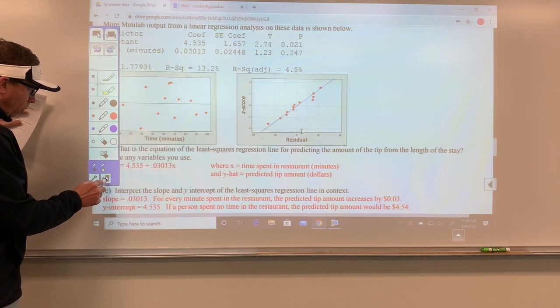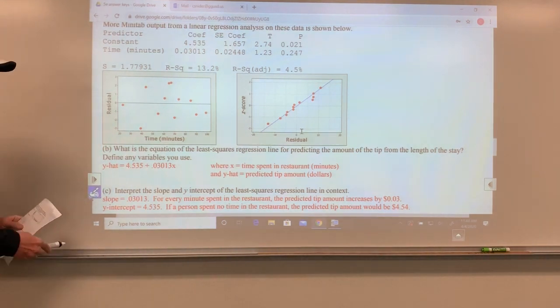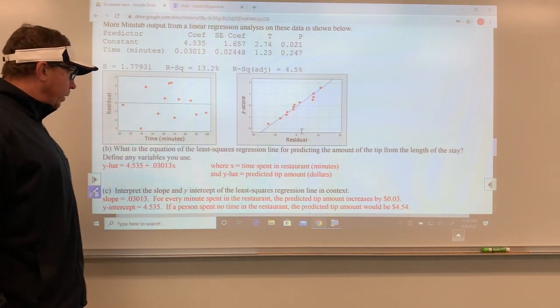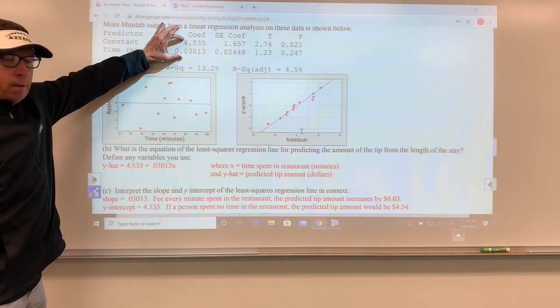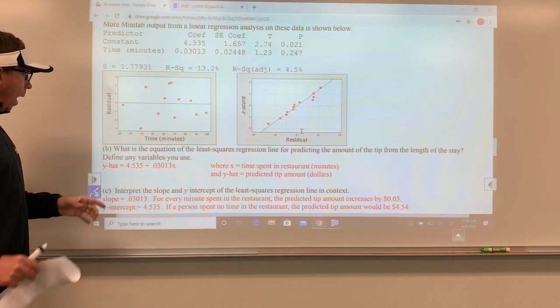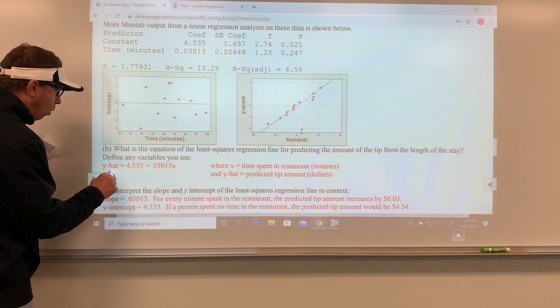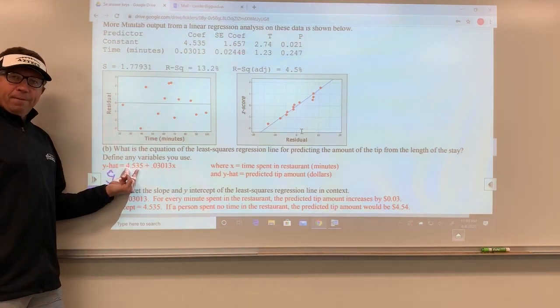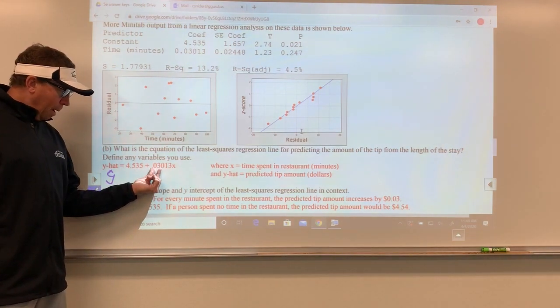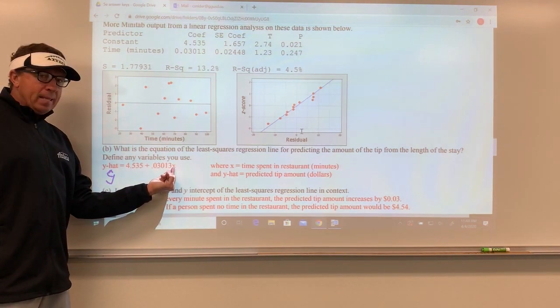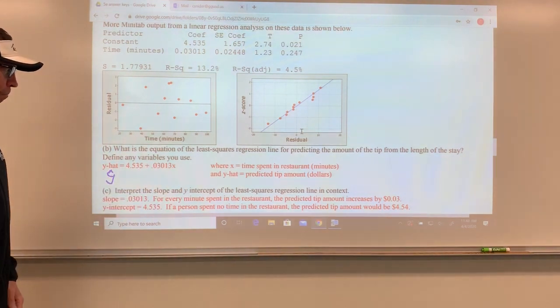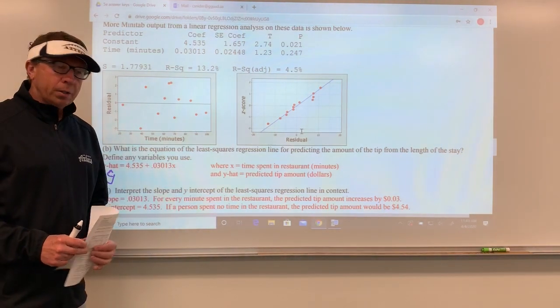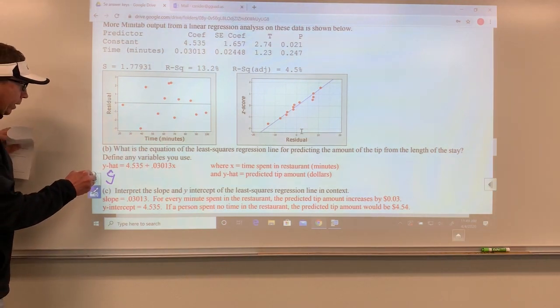The next question asks, what is the equation of the least squares line for predicting the amount of the tip from the length of the stay? This is real easy to pick off of here. This is a and this is b. So y hat is 4.535, meaning $4.54, plus about 3 cents for every minute that you spend. I've labeled x and y. X is time spent in minutes, and y is the predicted tip in dollars.